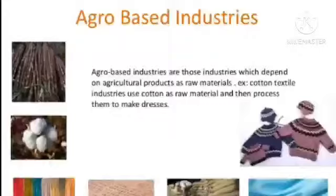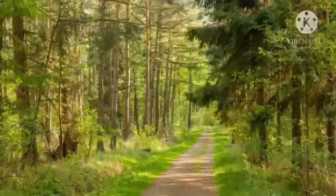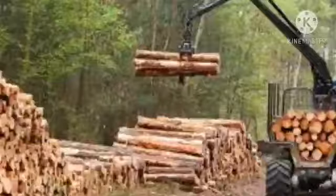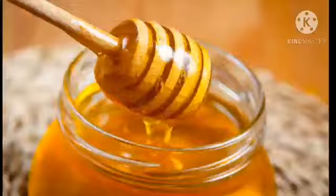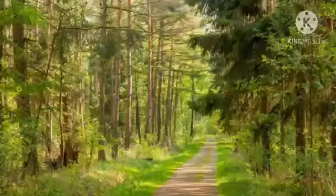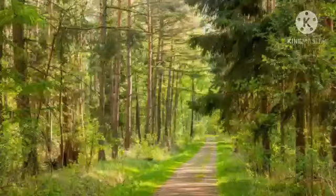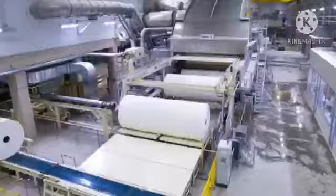After knowing about cotton, we come to know about forestry. What is forestry? Many people collect wood, rubber, honey, husk, lac, and gum from trees. These are the raw materials that are used to make furniture, matchsticks, paper, cardboard, and many other things. Paper is also made from wood pulp, so trees are cut to make paper.